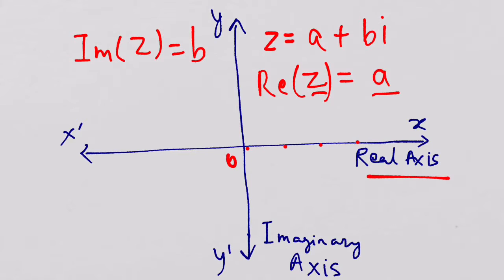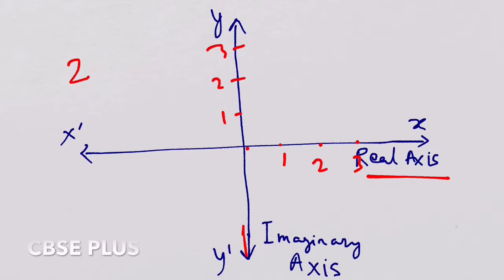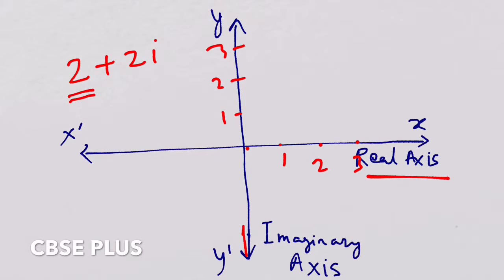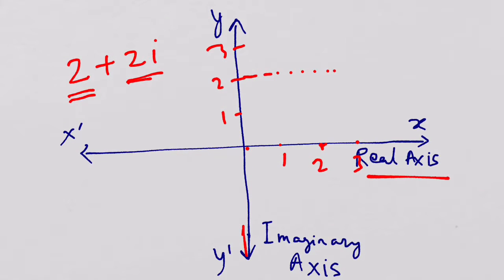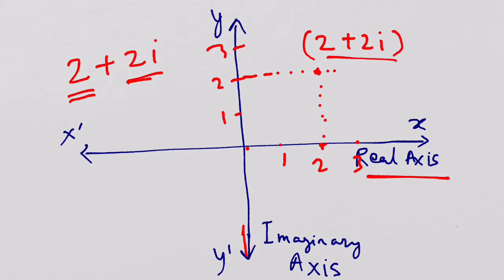The imaginary part 'b' is represented on the imaginary axis, the y-axis. For example, take 2 plus 2i. The first 2 is the real part, so we consult the x-axis. The second 2 is the imaginary part, so we consult the y-axis. We draw perpendiculars to both axes, and where they meet is the point representing the complex number.